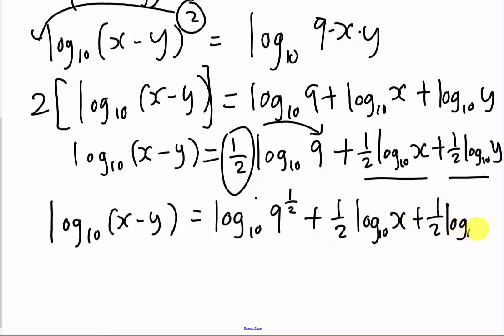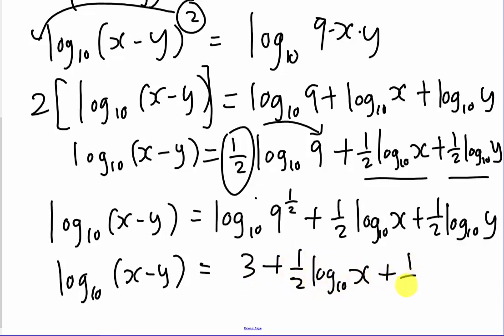So I move the half to become log base 10 of 9 to the power of one-half. 9 to the power of one-half is the same meaning as square root. Square root of 9 gives me 3. So I can rearrange everything: log base 10 of 3 plus half log base 10 of x plus half log base 10 of y. Then you can write proven.